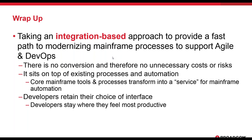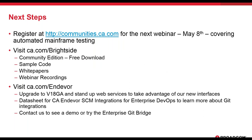The integration-based approach transforms existing tools into a service with a better interface for developers who want it, while those happy in their 3270 environment can stay there. Our next webinar is May 8th, covering automated mainframe testing. For more info: go to ca.com/brightside for downloads, sample code, white papers, and webinar recordings; and ca.com/endeavor for information on the enterprise Git repository integration — the CA Endeavor SCM Integrations for Enterprise DevOps.